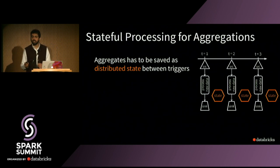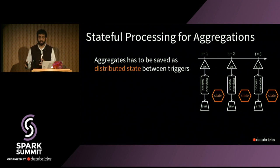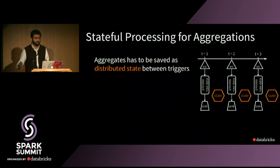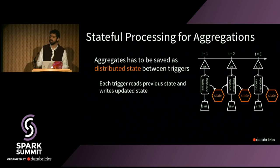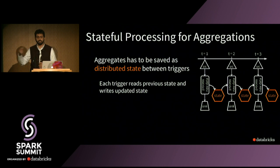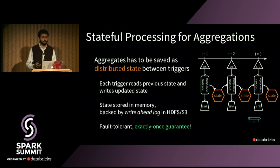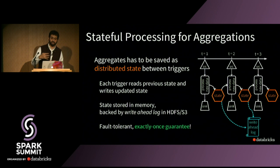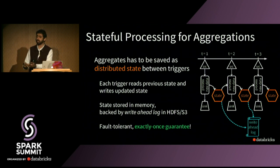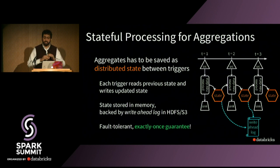Underneath, we have running aggregations going on for every window. To keep these partial aggregates alive across micro-batches, we keep them around as distributed state. In every trigger, every incremental execution reads the previous state, updates it, and writes out a new version of the state for the next trigger to consume. This state is stored in the executor's memory but is also backed to a fault-tolerant file system like HDFS or S3 by saving all changes to that in-memory state into a write-ahead log inside the checkpoint location you specified. This happens completely seamlessly behind the scenes.